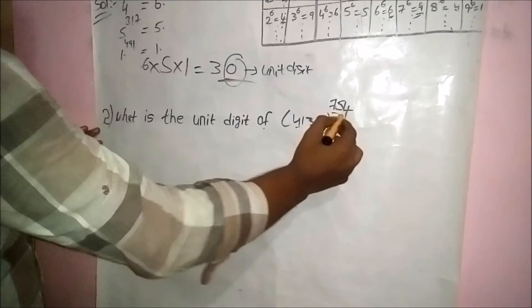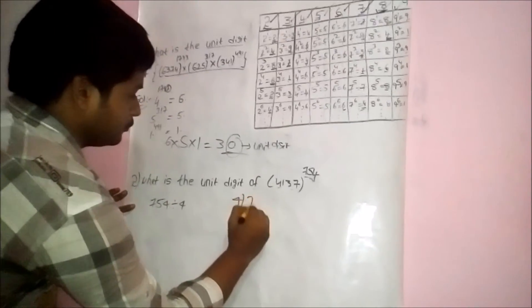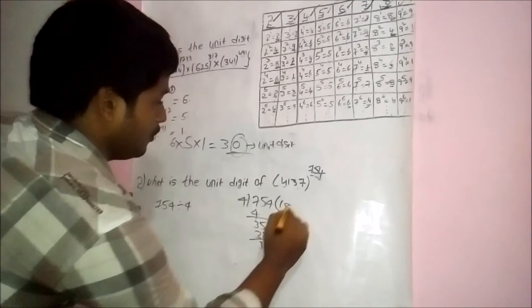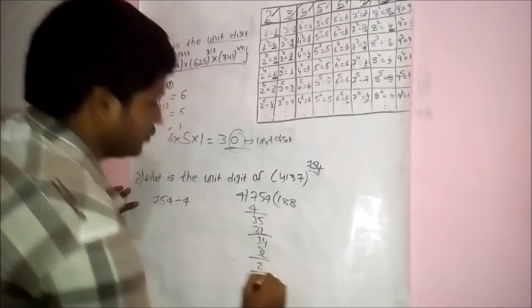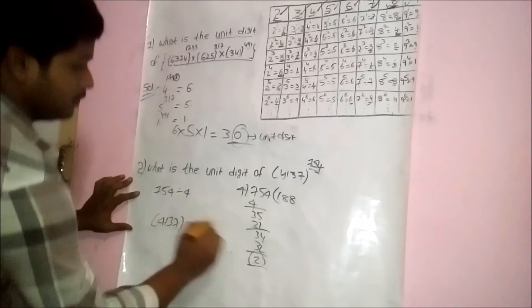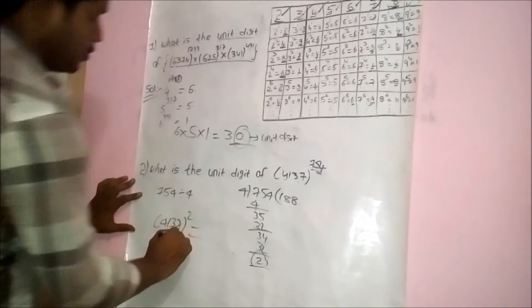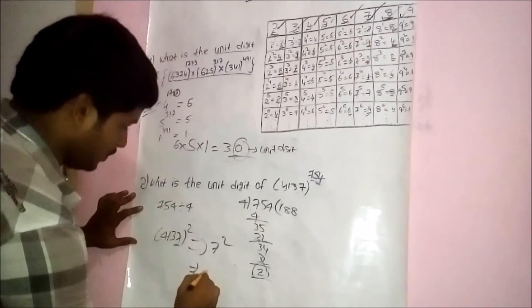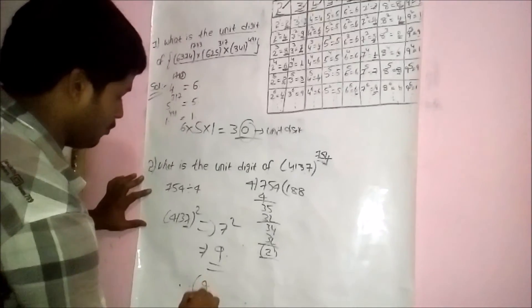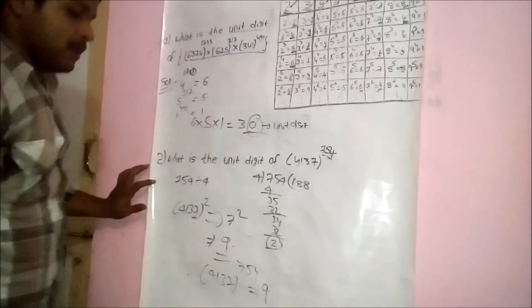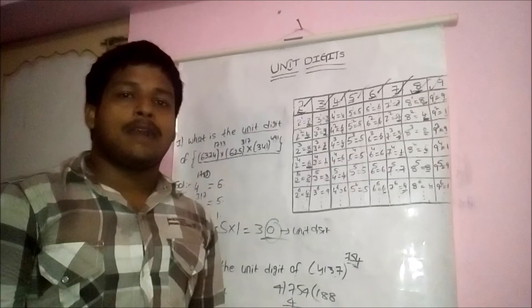Final problem: find the unit digit of 4137 power 754. Divide 754 by 4 — remainder is 2. Replace power with 2, and take unit digit of base only: 7 power 2. According to the unit digit concept, 7 power 2 is 9. Therefore 4137 power 754 unit digit is 9. Thank you for watching this video, please like, comment and share with your friends.